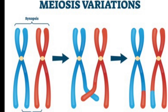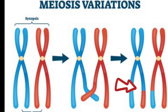After pairing, crossing over occurs. Crossing over means a segment from the father chromosome crosses over to a segment of the mother chromosome, while a segment of the mother chromosome also crosses over to a segment of the father chromosome. This leads to genetic variation between parents and their offspring. These all occur during prophase 1.